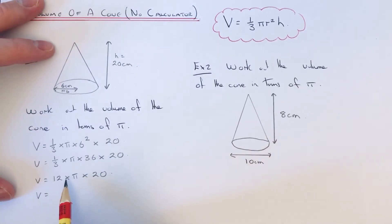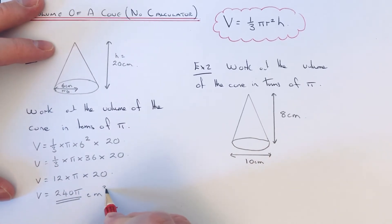Then we can multiply the 12 by the 20. So 12 times 2 is 24, and just put the 0 there. So we get 240 pi centimeters cubed.